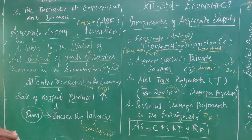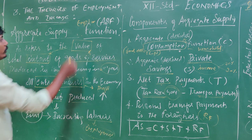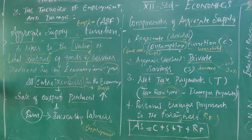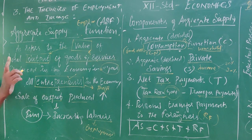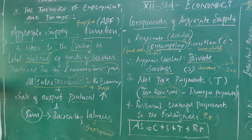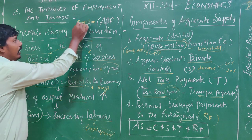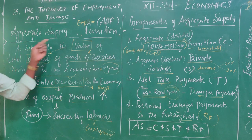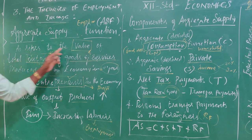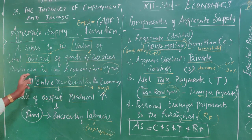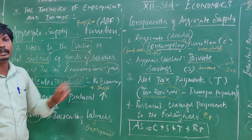The aggregate supply function, which is equal to employment. The aggregate supply refers to the value of total output in goods and services produced in the economy in a particular period.